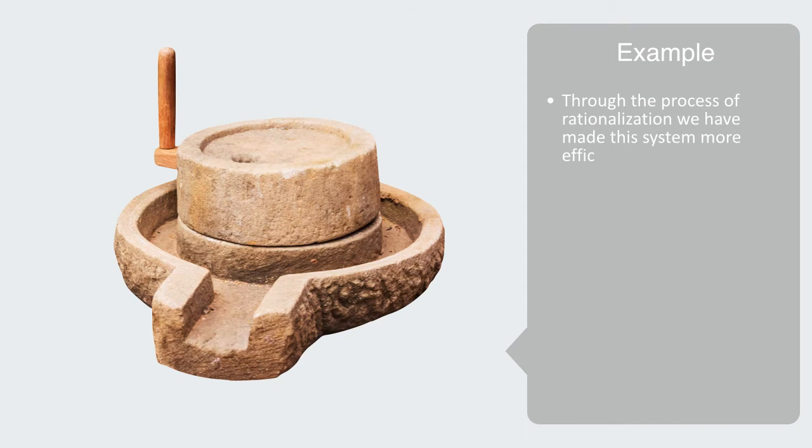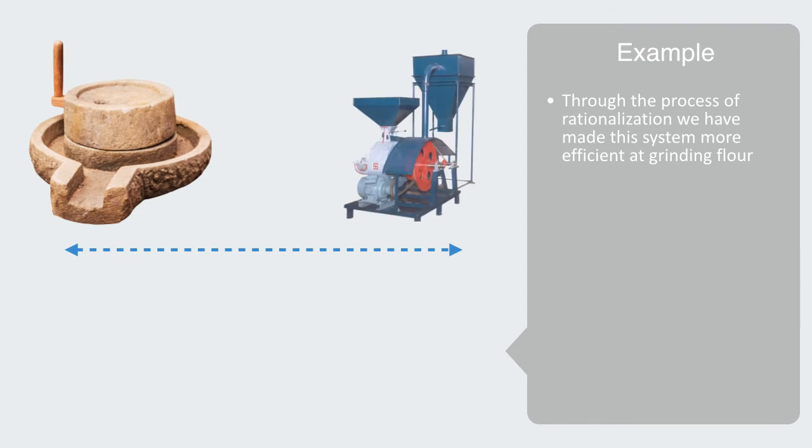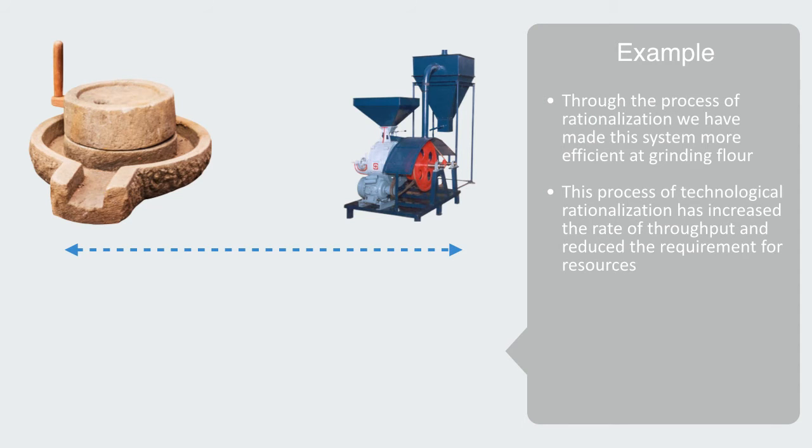Through the process of rationalization, we've made this system more efficient at grinding flour. Thus, at the high end of the spectrum, we have a contemporary mill that is automated with a high throughput of flour to the energy inputted. This process of technological rationalization has not only increased the rate of throughput to the system, but also reduced the requirements for physical resources and human capital by automating the process.